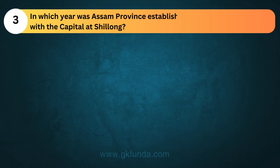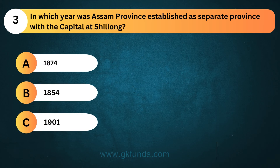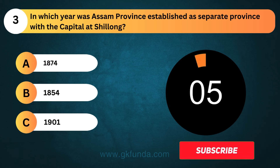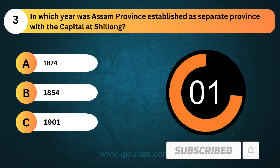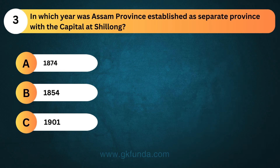In which year was Assam province established as a separate province with the capital at Shillong? The answer is option B, 1854.